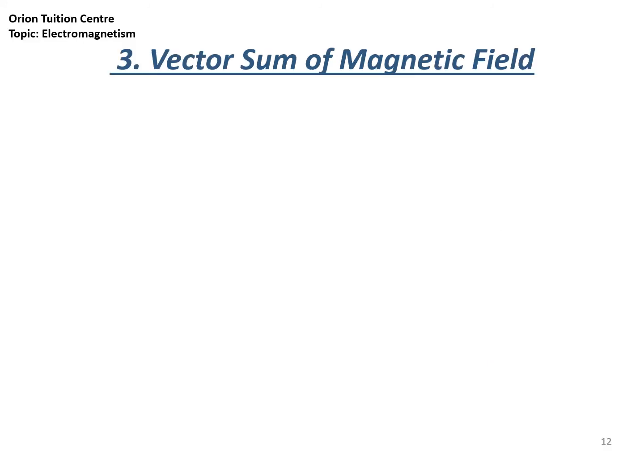In the last section of the video, we look at the vector sum of magnetic fields when there is more than one field present. The magnetic field strength is measured in Tesla. Since magnetic field is a vector, 3 Tesla plus 2 Tesla may not equal 5 Tesla — unless it is a scalar sum or if the magnetic field vectors are pointing in the same direction.